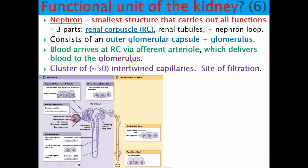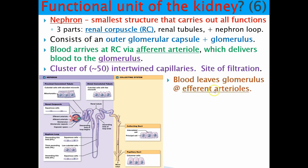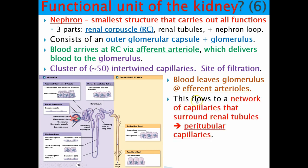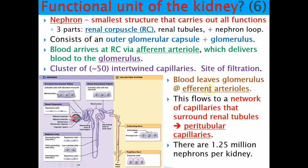Blood leaving the efferent arteriole flows into a network of capillaries surrounding structures called renal tubules — these are called peritubular capillaries. This is where exchange between the tubes and nephron occurs. You need to know that peritubular capillaries come after the efferent arteriole. There are approximately 1.25 million nephrons in each kidney, showing how energy-expensive this organ is in filtering and cleaning the blood.